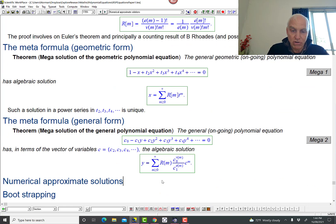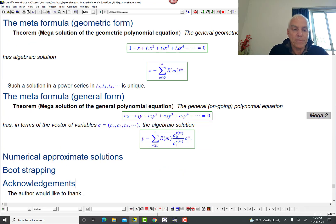And then the mega solution of the general polynomial equation. Well, that's something like that where we make that change of variable and we end up with an expression involving the general coefficients C0, C1, C2, C3, etc. Crucially with a minus sign in front of the C1, which is crucially important. And then there's some room for further sections.